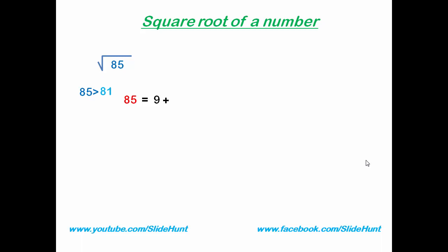Now the most important part: what should we add to 9? Find out the difference between 85 and 81, that is 4. So we add 4 divided by 2 times this number, that is 2 × 9. Now reduce this fraction by dividing the numerator and denominator with the same number if possible. Here we divide by 2 and we get 2/9. 2/9 is 0.22, so 9 + 0.22 = 9.22. So the square root of 85 is 9.22.